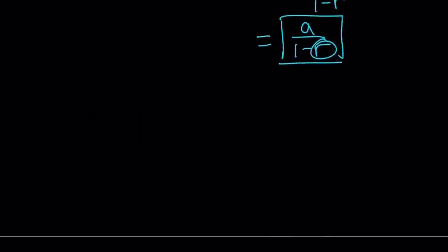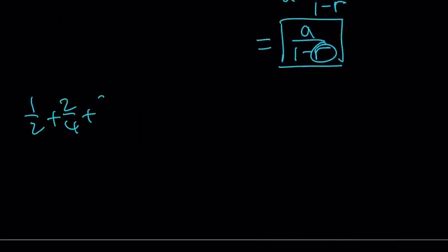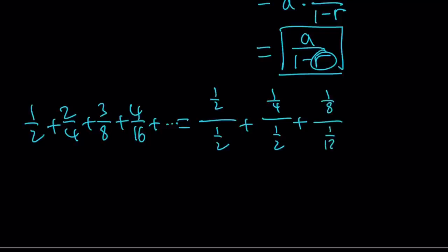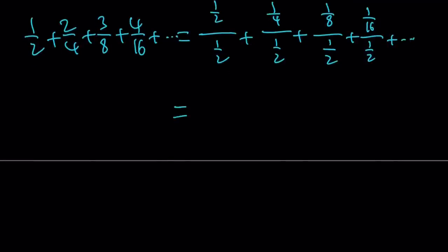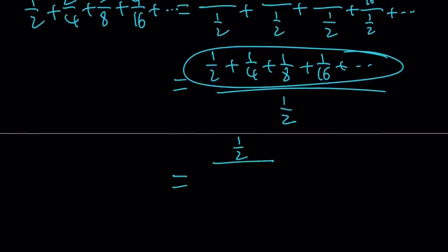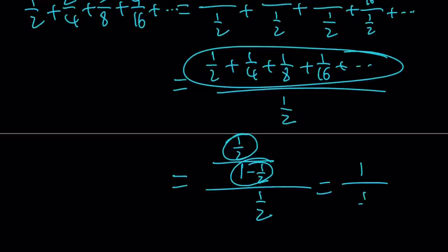So our series can be rewritten as: (1/2 over 1/2) plus (1/4 over 1/2) plus (1/8 over 1/2) plus (1/16 over 1/2), so on and so forth. They all have the same denominator of 1/2, so we factor that out. It becomes (1/2 plus 1/4 plus 1/8 plus 1/16 plus ...) divided by 1/2. That numerator is again a geometric series with first term 1/2 and ratio 1/2, giving 1 over (1 minus 1/2) = 1/2 over 1/2. So the whole expression is 1 over (1/2), which equals 2.